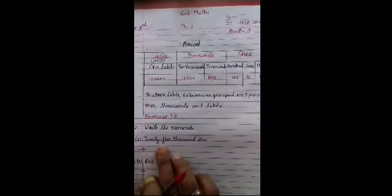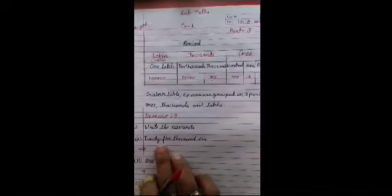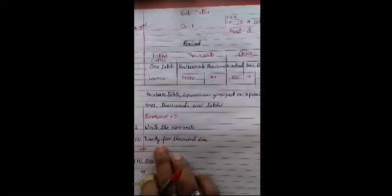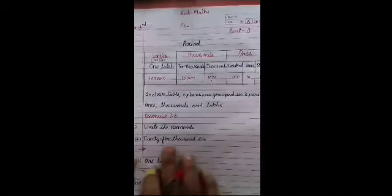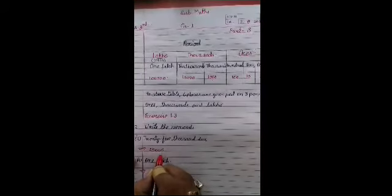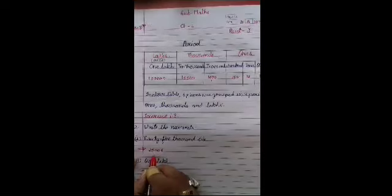Now exercise one point three of your book. Question number two, write the numeral. Twenty five thousand six. Yarni number name ke rup mein hamko dee gai hai, toh humko iski sankhya, yarni digits ke rup mein likhna hai. Twenty five thousand and six. To ye ho gaya twenty five thousand and six. Yarni six jo woh one ki place pe aagya hamara. Or hundred or tens ki place pe kuchh nahi hai. Or ye twenty five thousand ho gaya.